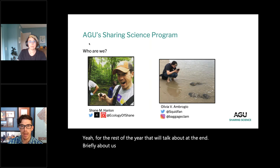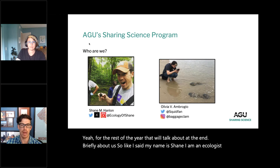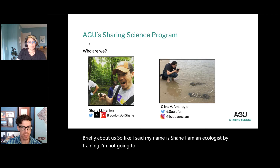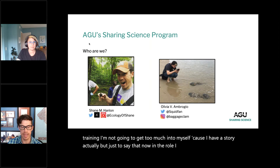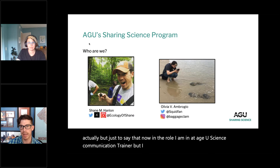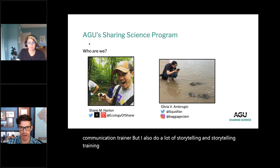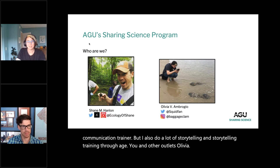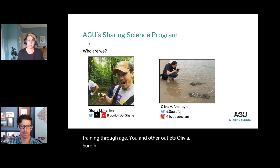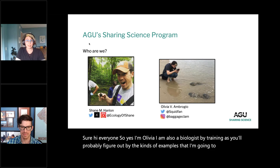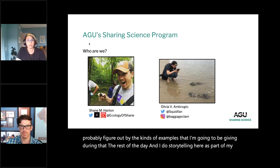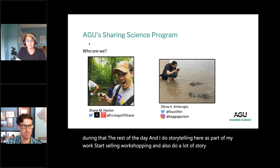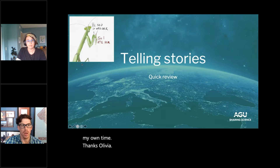My name's Shane — I'm an ecologist by training, now a science communication trainer at AGU, and I do a lot of storytelling and storytelling training. I'm Olivia — I'm also a biologist by training, as you'll probably figure out from the kinds of examples I'll give. I do storytelling as part of my work, including workshopping, and also do a lot of story writing in my own time.